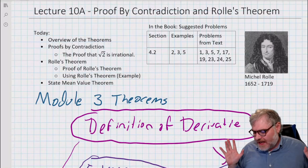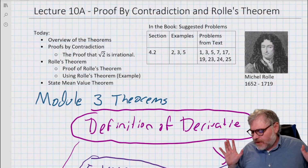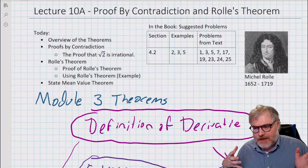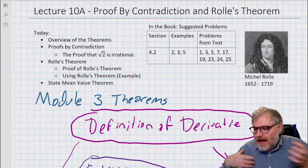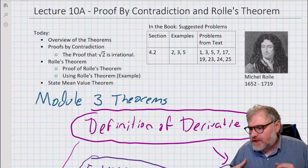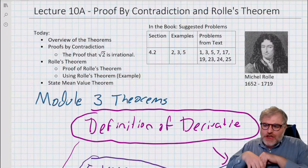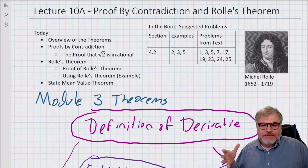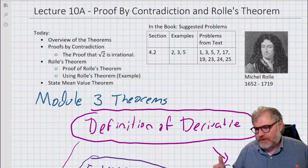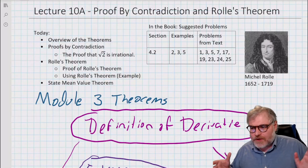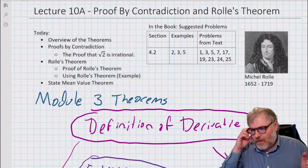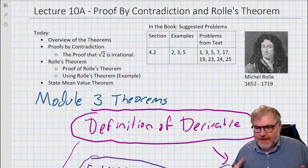So what we're going to do today is go over the theorems in Module 3 — there are a lot of them, and they kind of flow into Module 4. We're just going to go over the theorems and how they depend upon each other in the proofs, going over what we're doing and why we're doing the Mean Value Theorem and what's important about it.